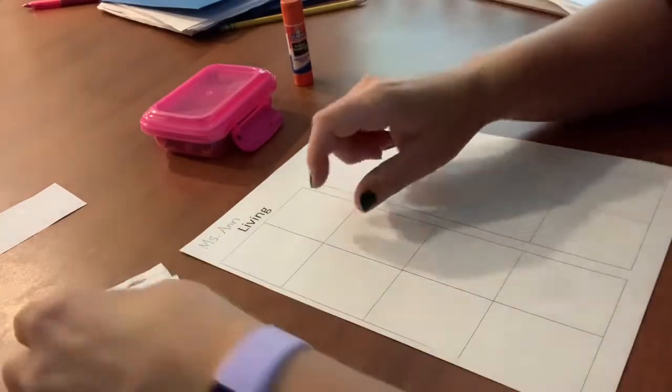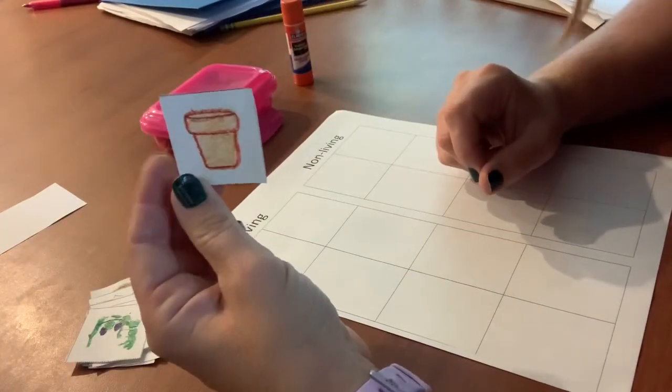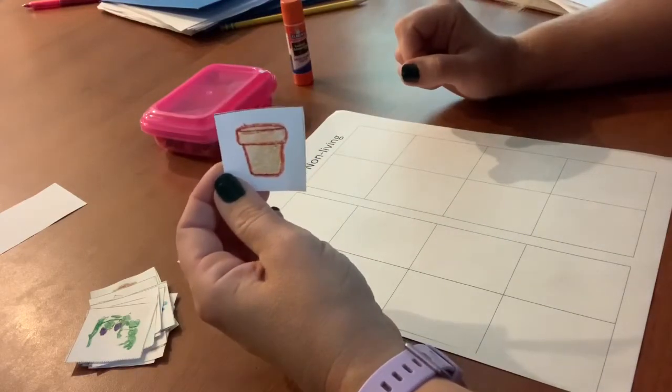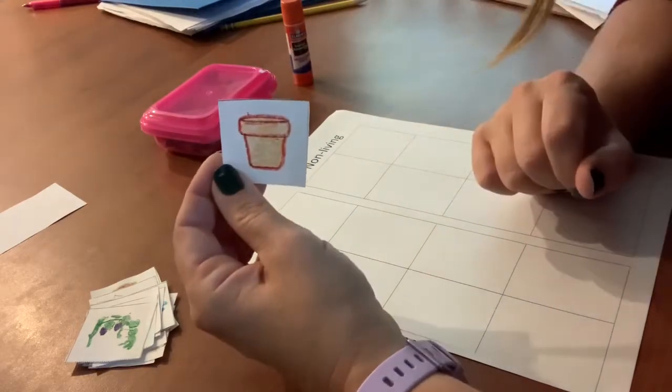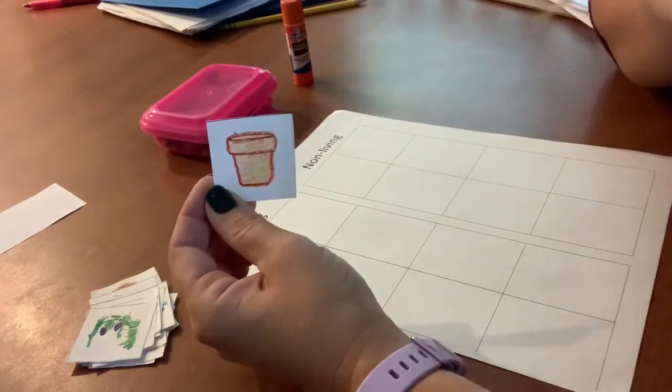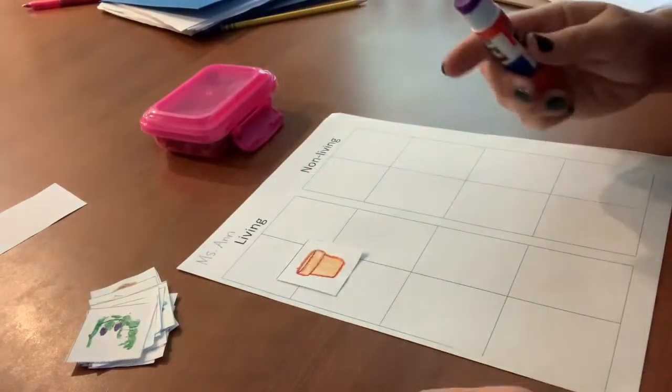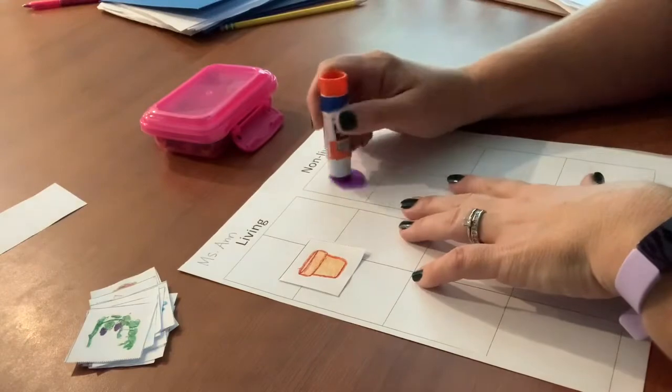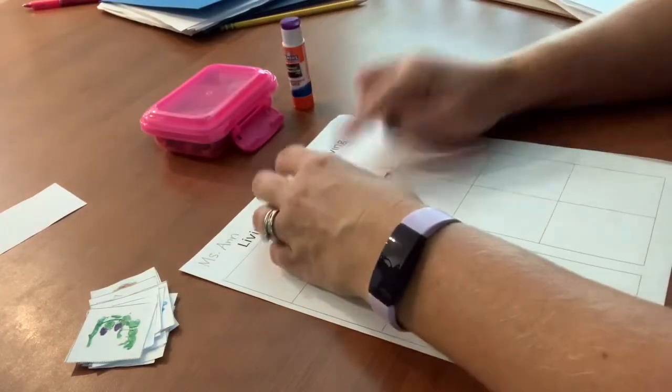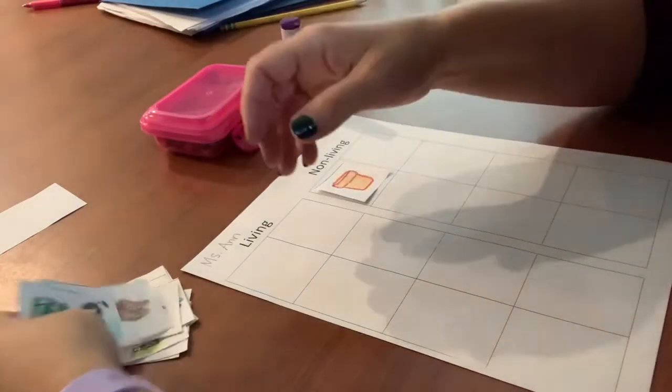All right let's start here with the flower pot. I look at this flower pot and I know a flower pot does not grow. Now the flowers that may go inside might grow but the pot itself does not grow. So this is a non-living thing. So I'm going to take just a little bit of my glue stick and put my picture under non-living.